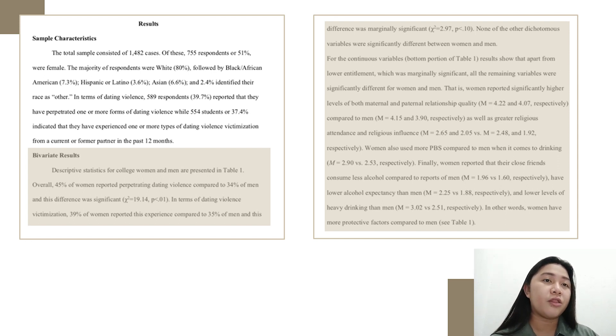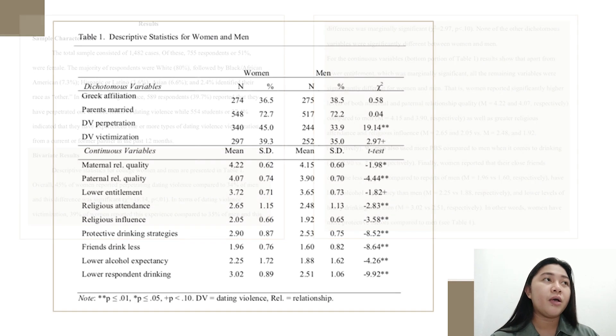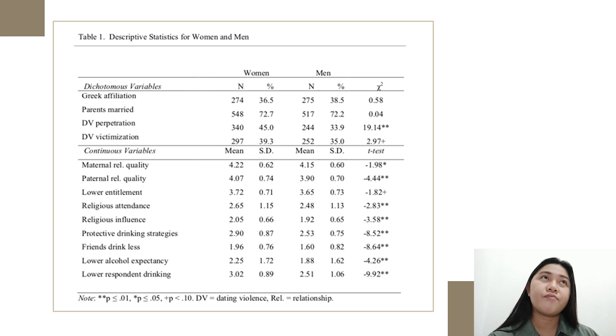And also women use more BPS compared to men when it comes to drinking. Finally, women reported that their close friends consume less alcohol compared to reports and have lower alcohol expectancy than men and also lower levels of heavy drinking than men, based on the table. In other words, women have more protective factors compared to men.